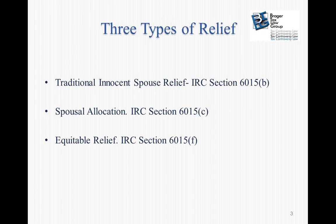The second type is the so-called spousal allocation rules of Section 6015(c). Generally speaking, if you manage to qualify, that is the easiest route to go. And then finally, we have equitable relief under Code Section 6015(f). We are going to be talking about all three types today — what the differences are and what the qualifications are.